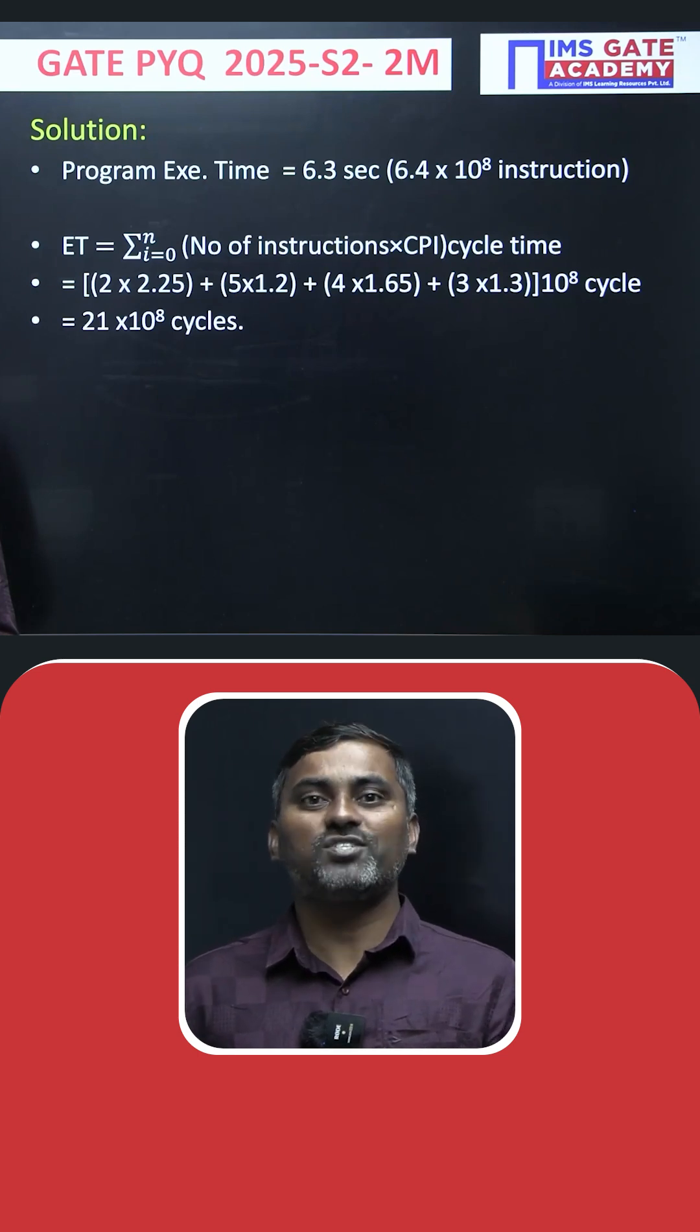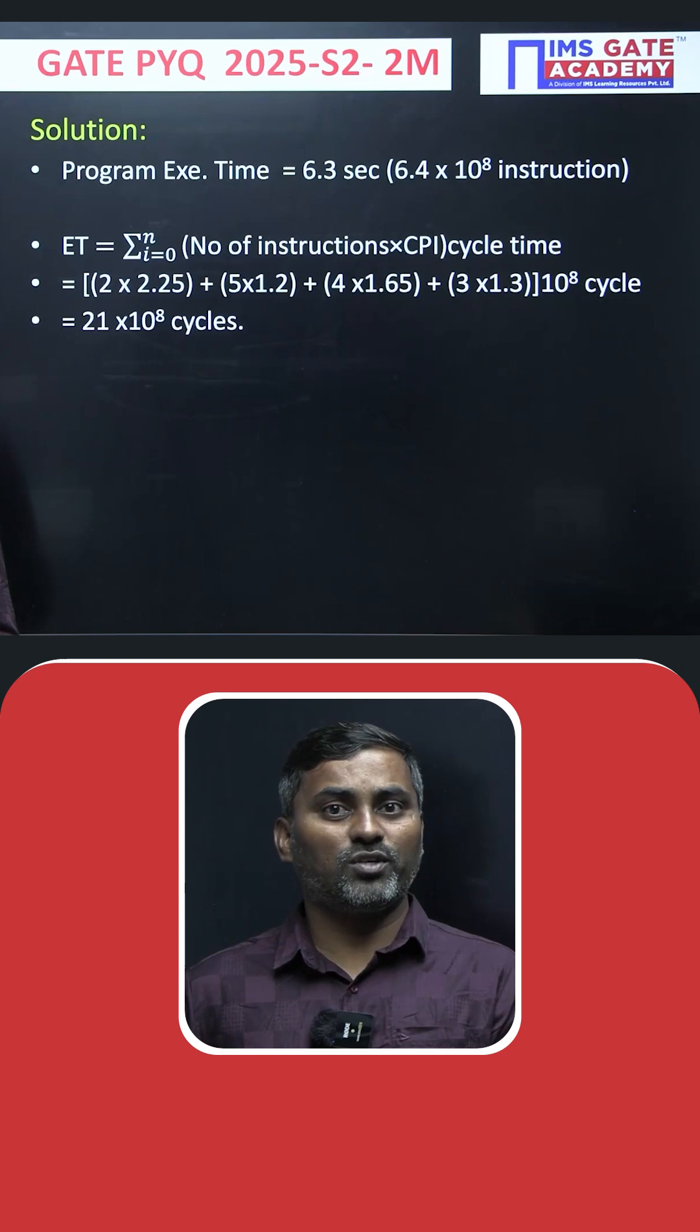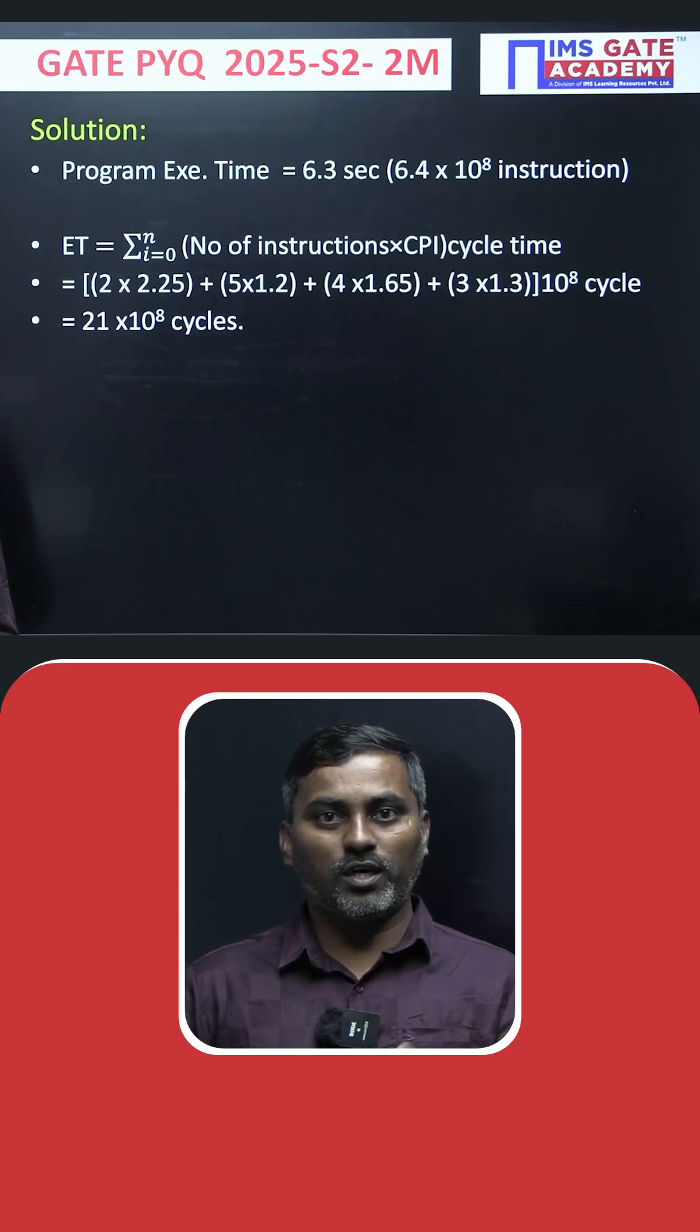If you know the clock cycle time, you can multiply to get the total time of the program. Or you can calculate the number of cycles required: number of instructions times clocks per instruction (CPI).